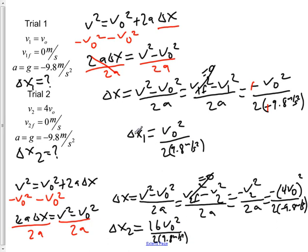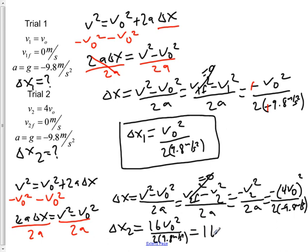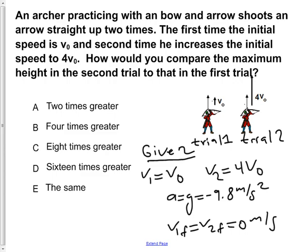As you can see, delta x1 is V-naught squared over 2 times 9.8 m/s², so delta x2 is equal to 16 times delta x1. This is our comparison of the maximum heights of the two trials — in the second trial, the arrow goes 16 times the height of trial one. Returning to our answer choices, the answer is D: 16 times greater.